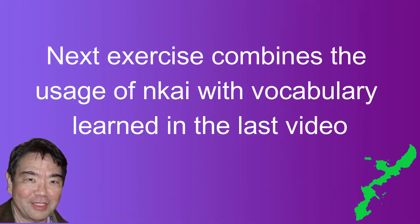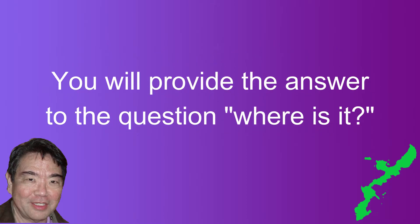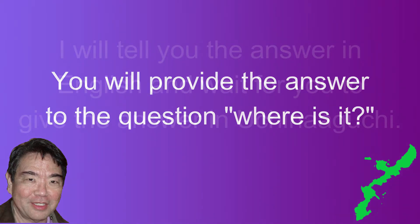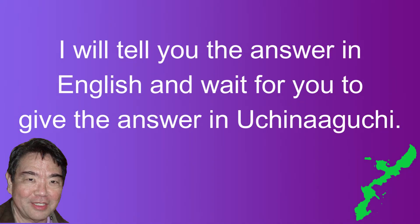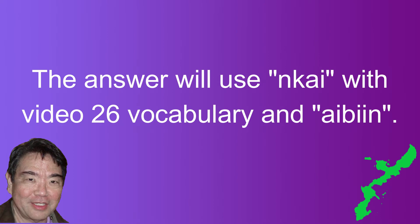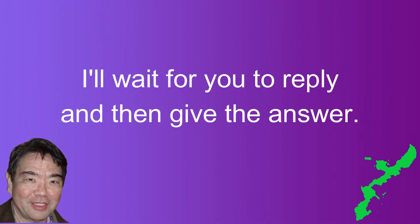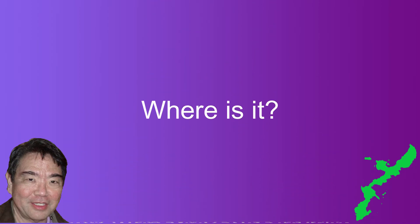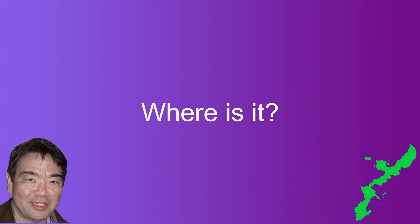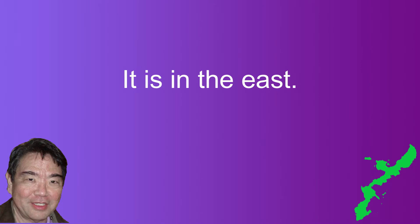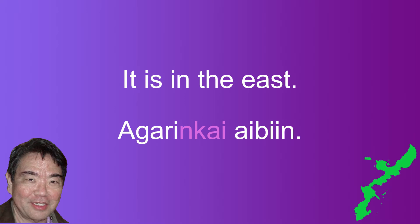Our next exercise will be to review the vocabulary that we learned in our last video. You will provide the answer to the question 'where is it?' I will say the answer in English, and you will provide the Uchinanguchi answer using the sentence particle unkai and appropriate vocabulary from the last video and aibing from video 13. I'll wait for you to reply and then give the answer. It is in the east: Agaring kai aibing.